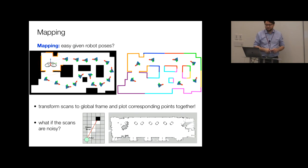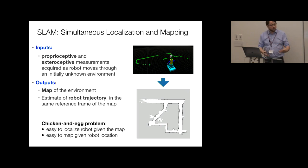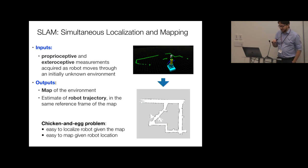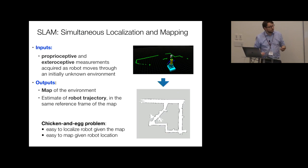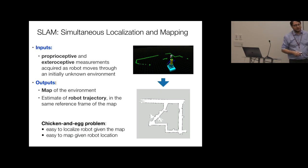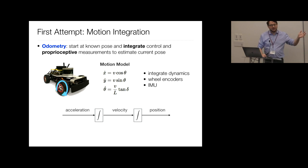SLAM is a much more challenging problem. The inputs are sensor data — typically one proprioceptive sensor and one exteroceptive sensor — and the robot moves in a completely unknown environment. The output is a map plus the robot's trajectory in the same reference frame. This is a chicken-and-egg problem: if you know the trajectory, reconstructing the map is easy; if you know the map, localization is fairly easy.